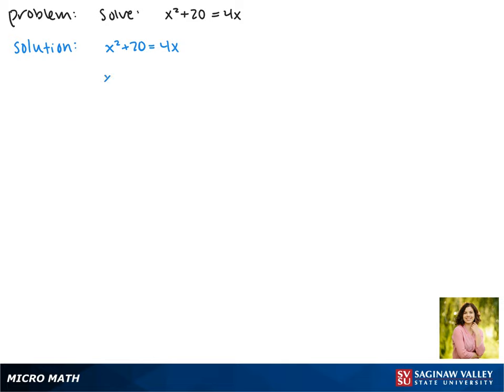That gives us x squared minus 4x plus some number. Moving 20 to the other side, we see that this equals negative 20 plus some number.